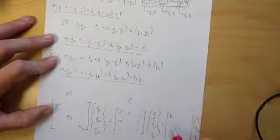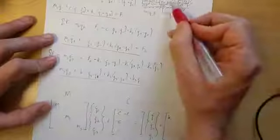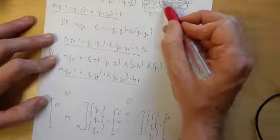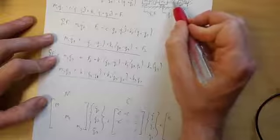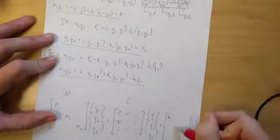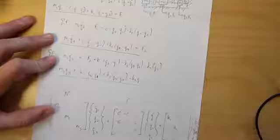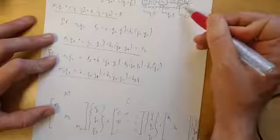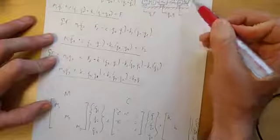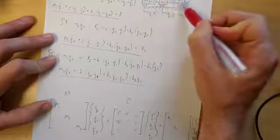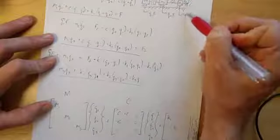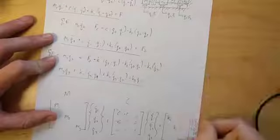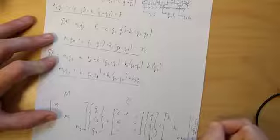And, moving along to our second row, how many springs act on the second degree of freedom? Well, K2. So we have K2 there. Now let's look at the third mass. How many springs act on the third mass? We have K1 acting on the third mass, K2 acting on the third mass, and K3. So K1 plus K2 plus K3.